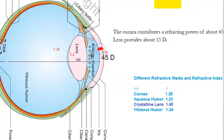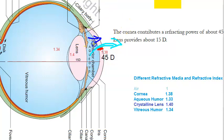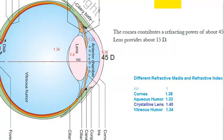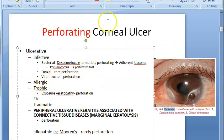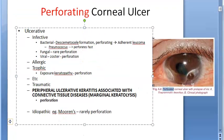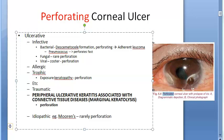When the cornea perforates, the aqueous humor — the fluid inside — will come out. Then the iris will come forward, and the lens will come forward as well. These are the complications that arise because of this perforation.